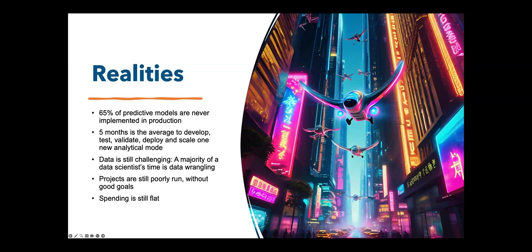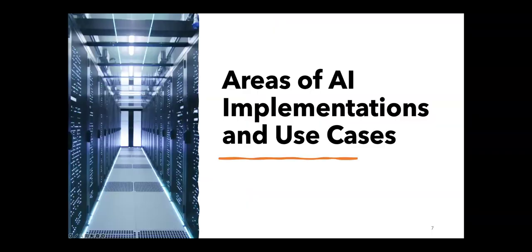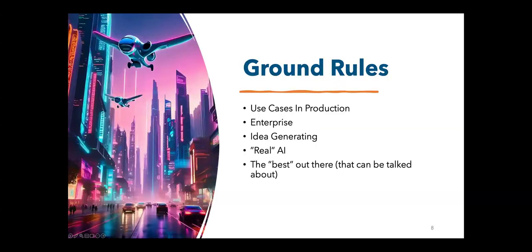I couldn't help myself because Amazon is doing some very progressive things with AI. I've got a couple of Amazon examples in here, but I think they're relatable to all of us. I'm talking about things that we all do — like there's an example in the HR area. The reality is the future looks bright, and I came up with 11 categories of AI implementations and use cases.